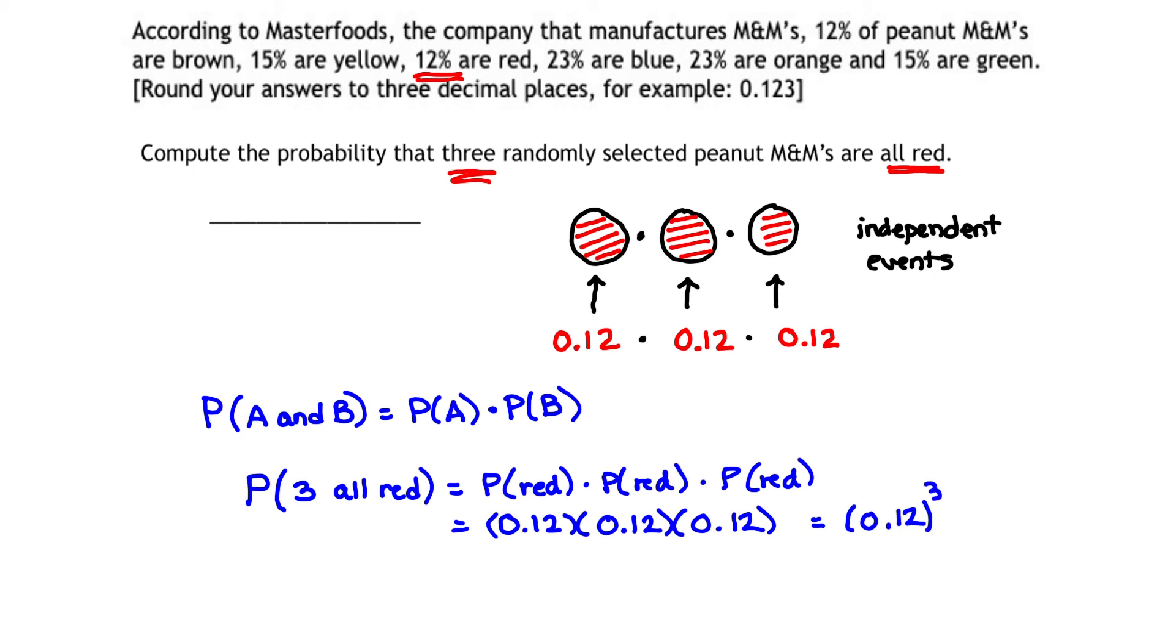So this is what we need to put into our calculator. 0.12 times 0.12 times 0.12, or 0.12 cubed, evaluated on the calculator gives us 0.001728.